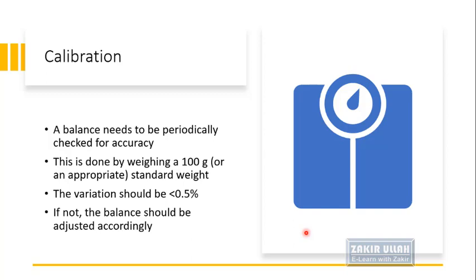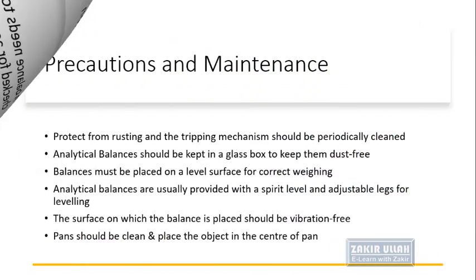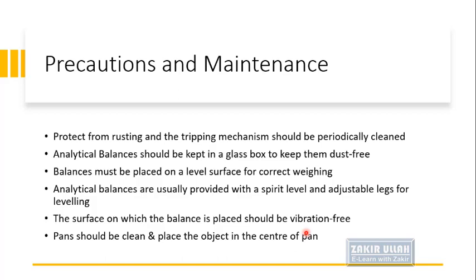Balances need to be periodically checked for accuracy through calibration. Calibration is done by weighing a 100-gram standard weight or another already known weight. The variation allowed should be less than 0.5 percent. If the variation is more than 0.5 percent, the balance should be adjusted accordingly.